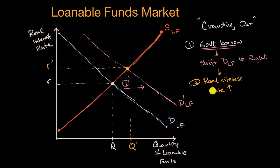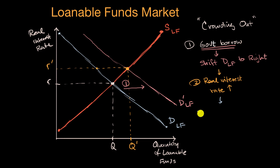What's going to be the impact in the private sector of a higher real interest rate? Let's imagine this first blue curve was just the private sector — the government just started to borrow, shifting the curve. Well, if the blue curve represents just the private sector, at this new higher interest rate, the private sector is willing to borrow a lot less. So we can say the private sector borrows less.